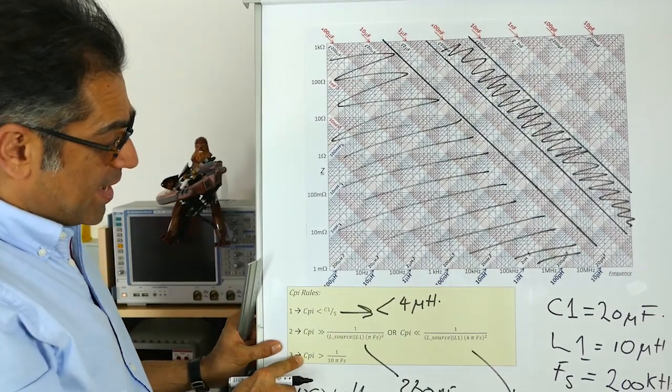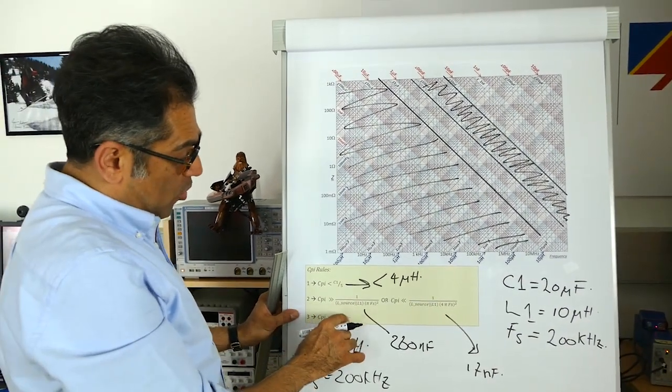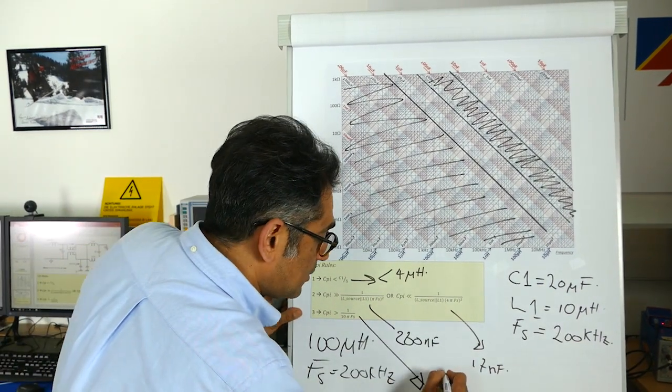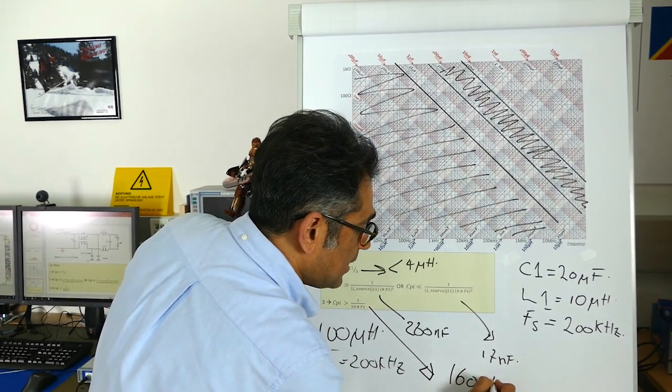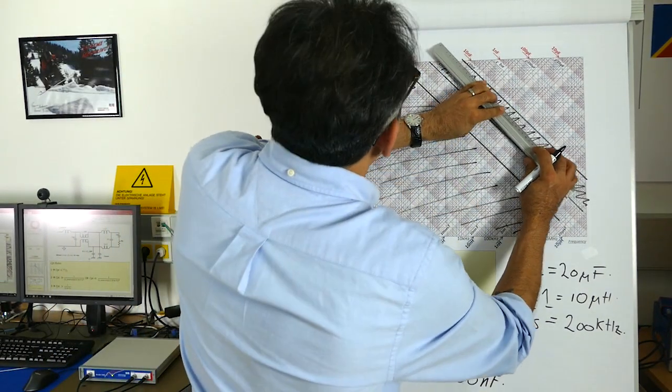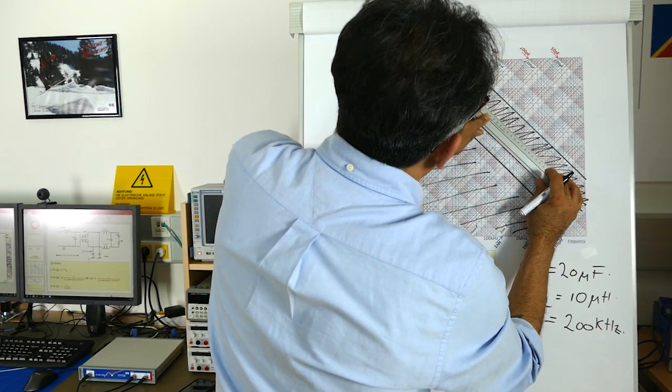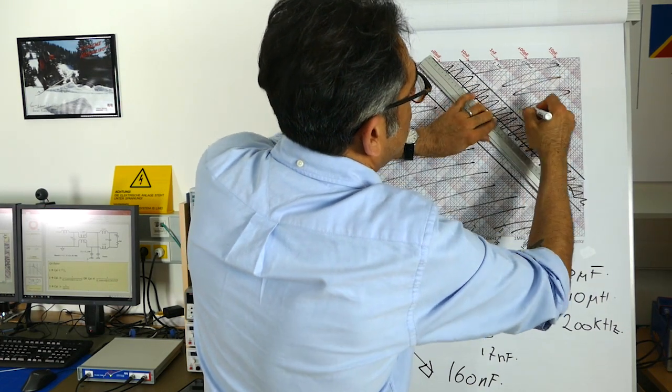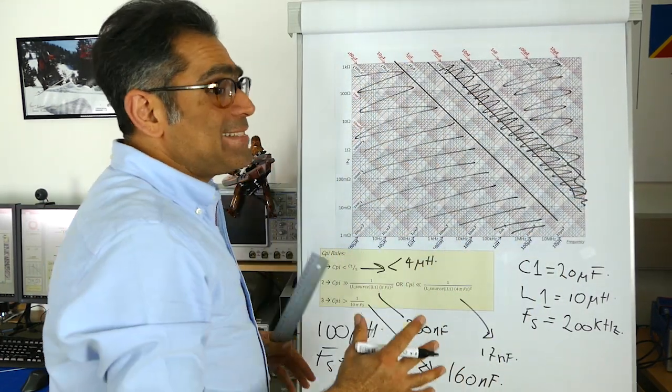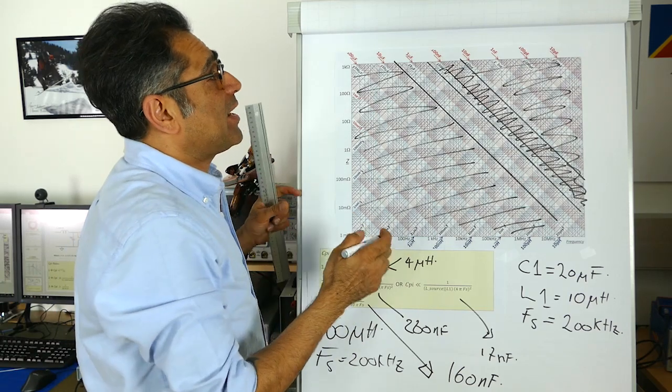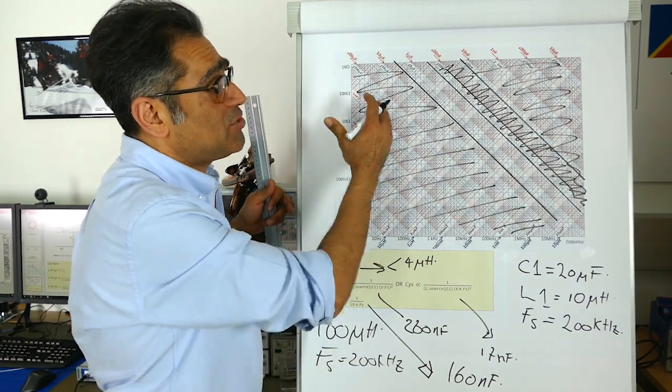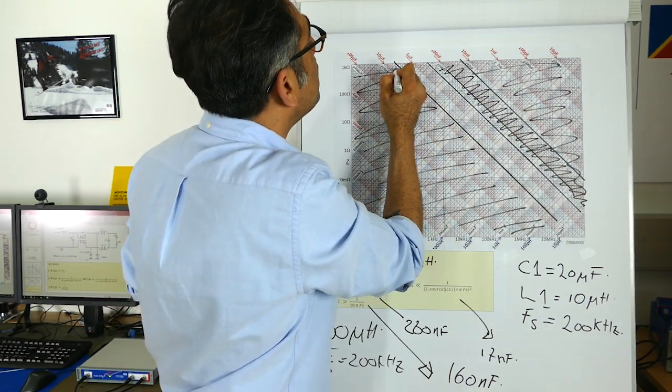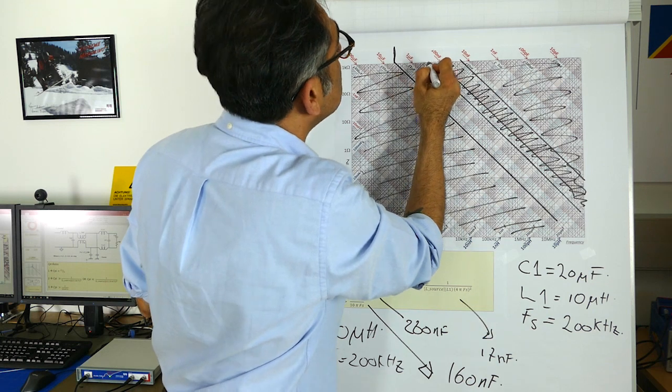Finally, we come to rule three. Cpi has to be bigger than 1 over 10 pi FS. And that turns out to be 160 nanofarads. So let's find out 160. It is around here. It has to be bigger than this. So all of this region will also go out of the picture. And it turns out that the size of my pi capacitor is actually very limited, as you can see, because all these areas have been crossed out. And I can only have it from this point up to this point.